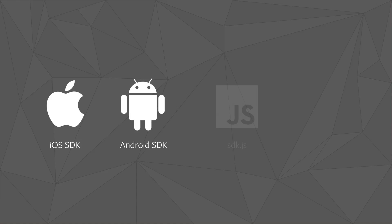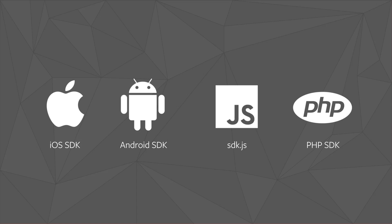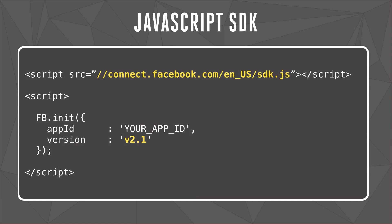So how do you actually go about beginning the process of upgrading? You can manually start specifying a version number in calls to the Graph API, but the simplest way to upgrade your apps to the new login is to use our latest SDKs. We have updated SDKs for iOS, Android, a new JavaScript SDK, and a completely rewritten PHP SDK. For iOS, Android, and PHP, these SDKs call V2.0 or V2.1 under the hood. For the new JavaScript SDK, you specify the version number in your init call. Note that the new JavaScript SDK should now be loaded from a new path, SDK.js.